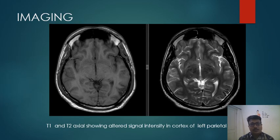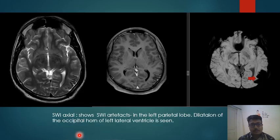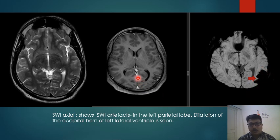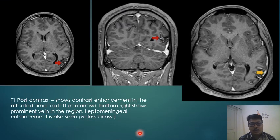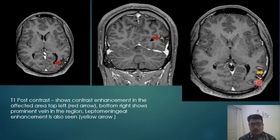On imaging, T1 and T2 axial images show altered signal intensity in the cortex of the left parietal region. On susceptibility weighted axial images, susceptibility artifacts were seen in the left parietal lobe in the form of signal dropout, identified by the red arrow, which signifies calcification. Dilatation of the occipital horn of the left lateral ventricle was also noted. On post-contrast sequences, enhancement was seen in the axial and coronal sections in the left parietal region, along with prominent veins and leptomeningeal enhancement, as indicated by the yellow arrow.